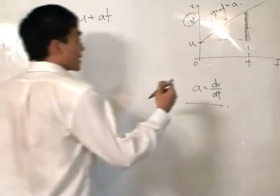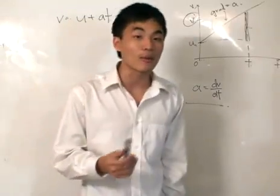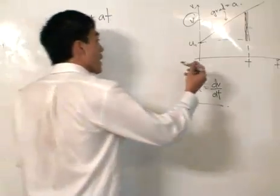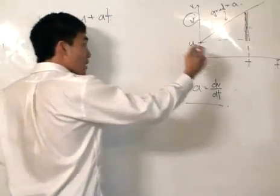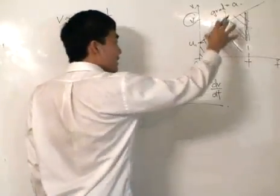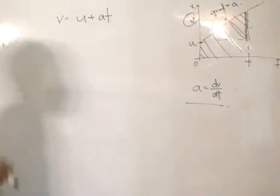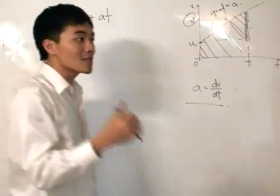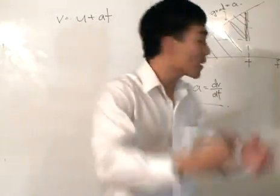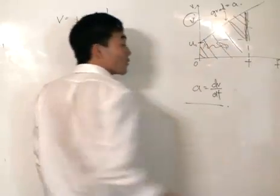The next thing we want to find is the displacement. As you know, the displacement from a velocity-time graph is simply the area under the graph. The displacement is represented by the whole area — not just the area of the top triangle, but the whole area under the graph. This is because if at time 0 I'm already moving at a certain initial velocity, I will cover much more displacement.